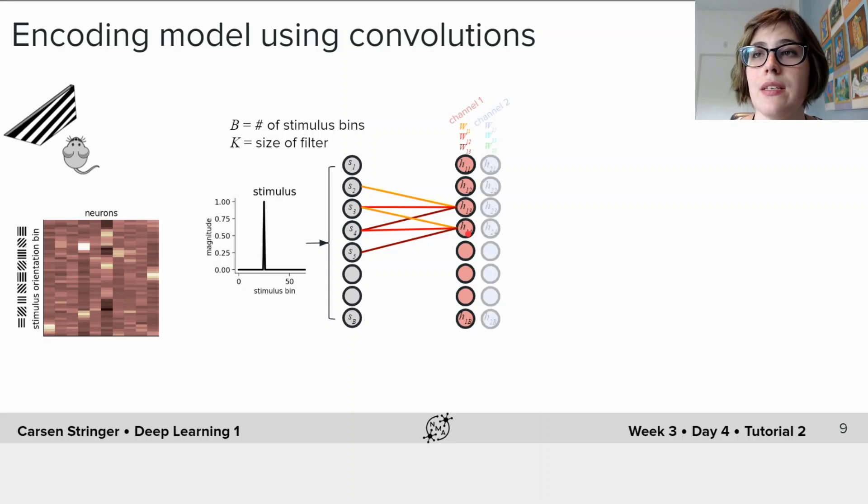Then we can do the same thing when we add a second channel of weights where we multiply the stimulus inputs by these weights for both of these cases and we slide these down to compute our hidden unit activations.